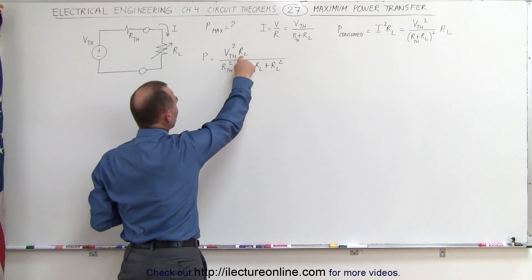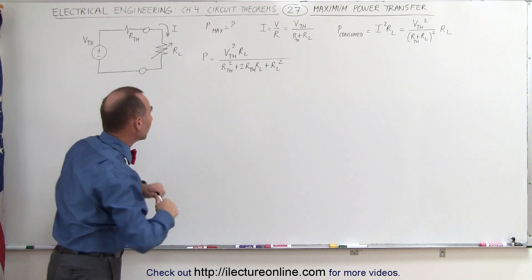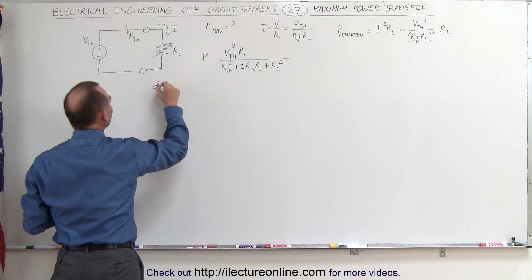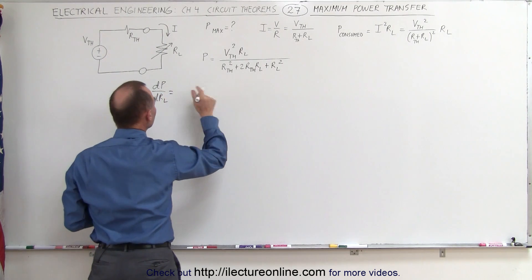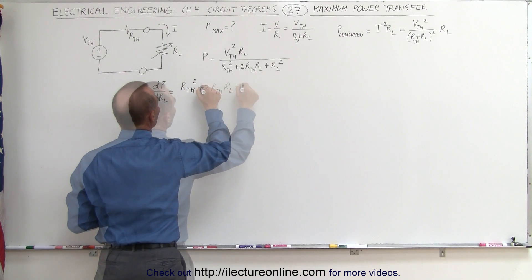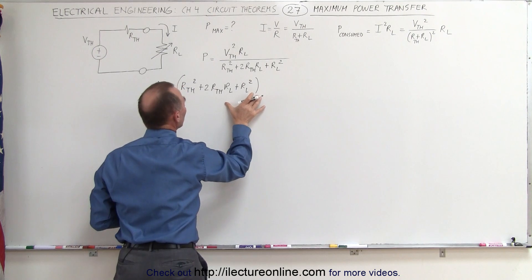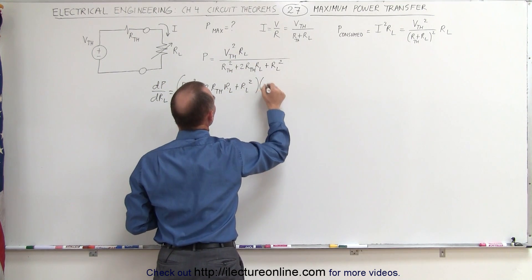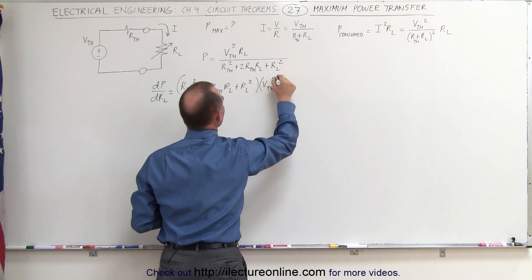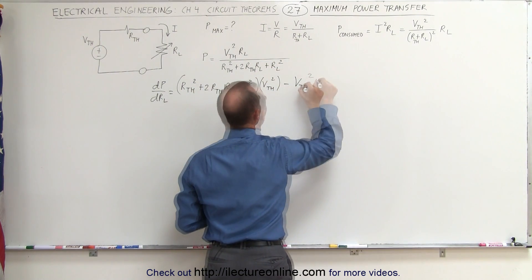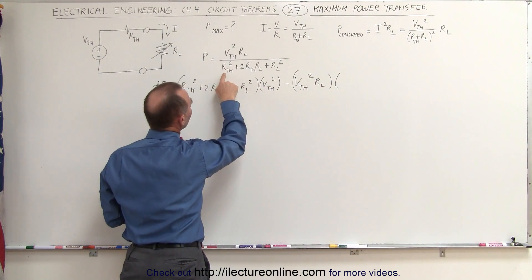Notice we have the variable in the numerator and in the denominator, so we have a quotient here. Taking the derivative of the power with respect to the load resistor, that's equal to the denominator times the derivative of the numerator, which is simply going to be the coefficient of R-sub-L, minus the numerator times the derivative of the denominator.